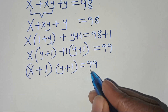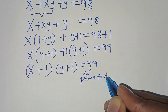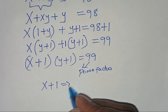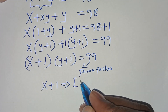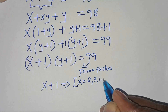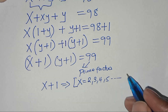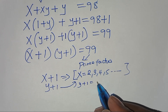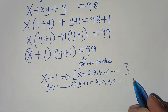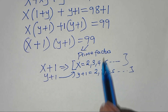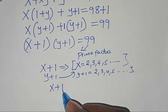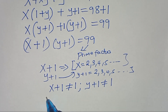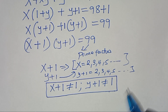The next step is that we need to get the prime factors of 99. But now we have that x plus 1 are actually positive integers, such that x plus 1 starts from 2, 3, 4, 5, all the way to positive infinity, and y plus 1 is the same thing, starting from 2, 3, 4, 5, all the way to positive infinity.